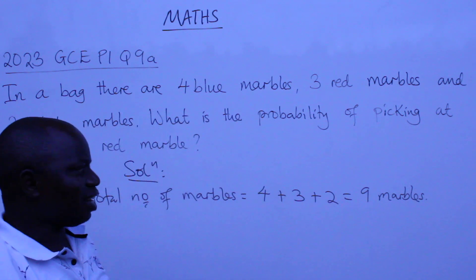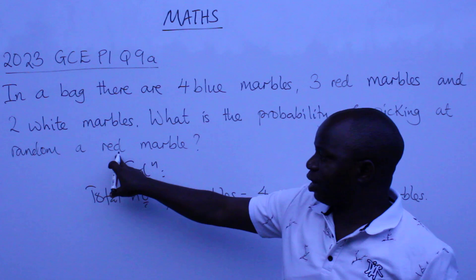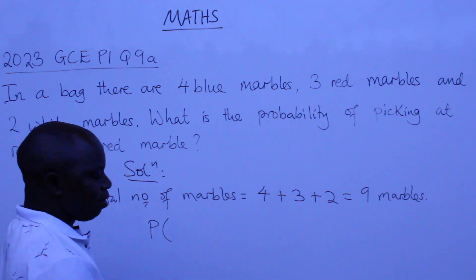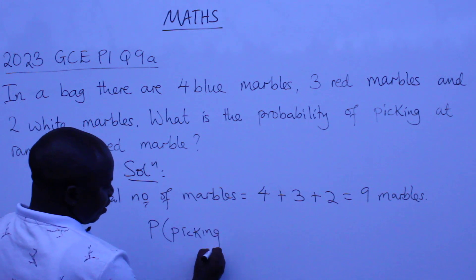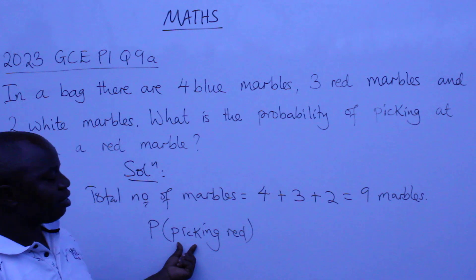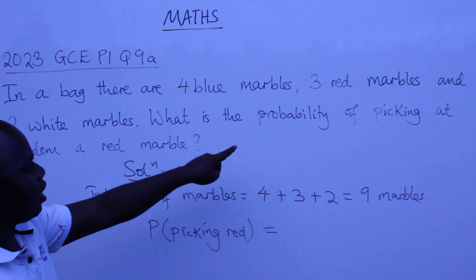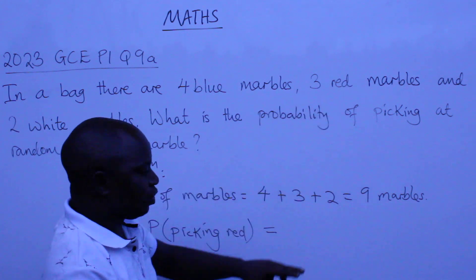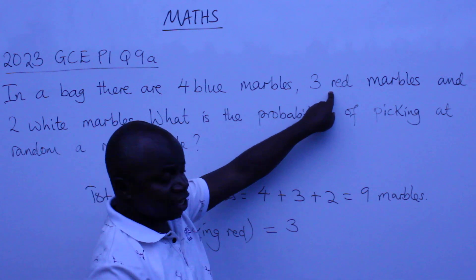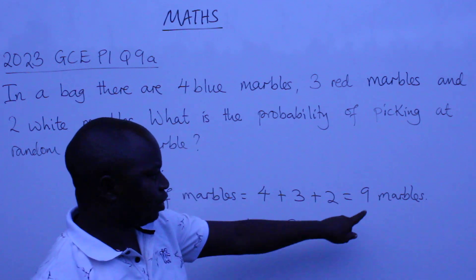Now, out of these nine, we are interested in picking at random a red marble. So we are going to say: probability of picking red. The probability of picking a red marble will be equal to the number of red ones — how many were there? There were three red. So you are picking a red marble out of three red, over the total number of marbles in the bag, which is nine.